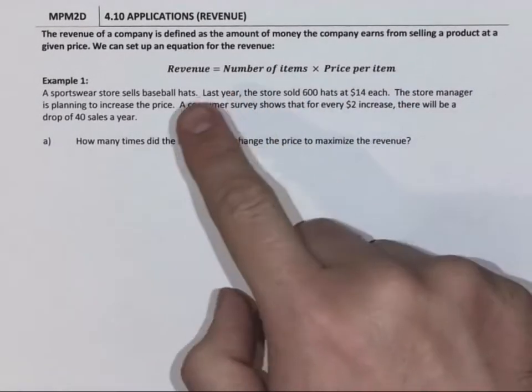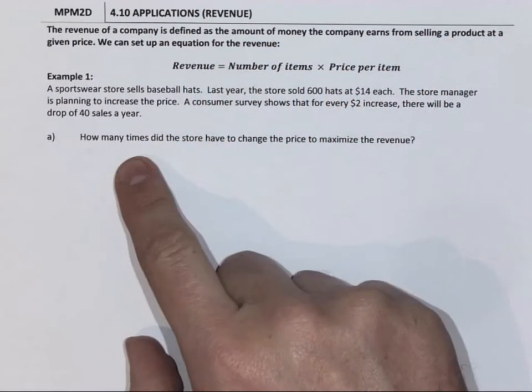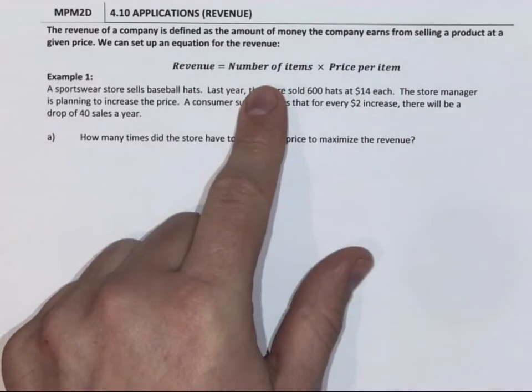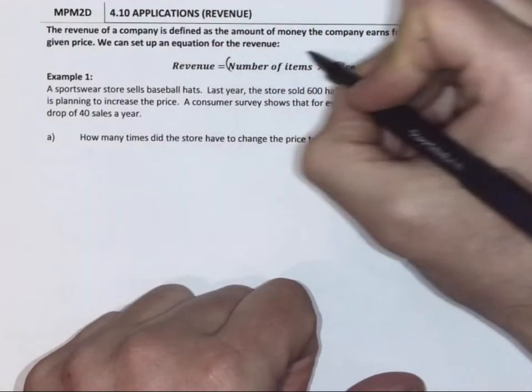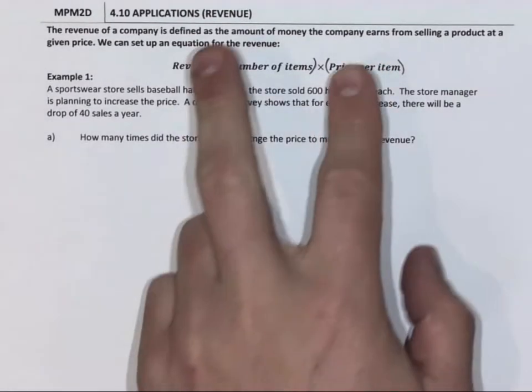The revenue of a company is defined by the amount of money the company earns from selling a product at a given price. So revenue is the number of items they sell times how much it costs for each item, and that's how much money they make.